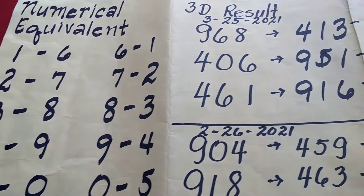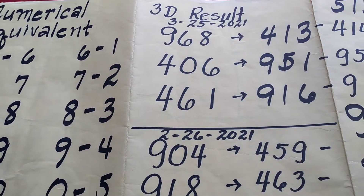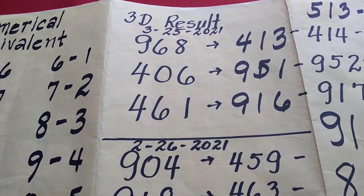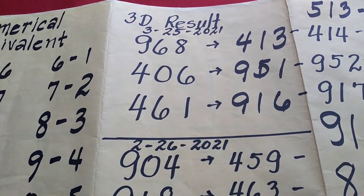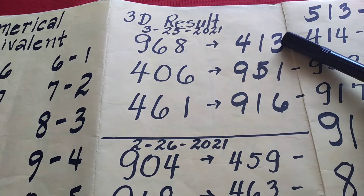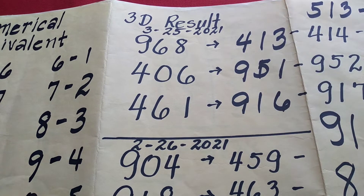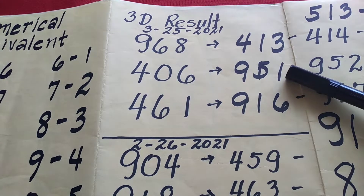Halimbawa, kahapon yung lumabas ay 9, 6, 8. So yung katumbas ay 4, 1, 3. Sa gabi, sa 5 p.m., yung lumabas ay 4, 0, 6. So ito ay 9, 5, 1.